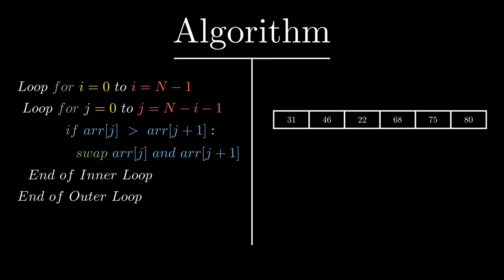We are done with pass 1, and as you can see the largest element of the array is placed at the very last index. Now we will start pass 2. For pass 2 the value of i will be 1, and the range of j will be from 0 up to 4. We repeat the same process as in pass 1, but this time up to the 4th index, so that the largest element in the remaining portion of the array comes to index 4.